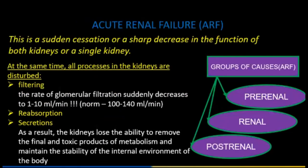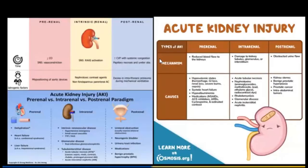Acute renal failure is a sudden cessation or sharp decrease in the function of both kidneys or a single kidney. Causes are grouped as pre-renal, renal, and post-renal. All processes in the kidney are disturbed: filtering, reabsorption, and secretion. For further reference, osmosis.org is a recommended site for preparation on acute kidney injury.